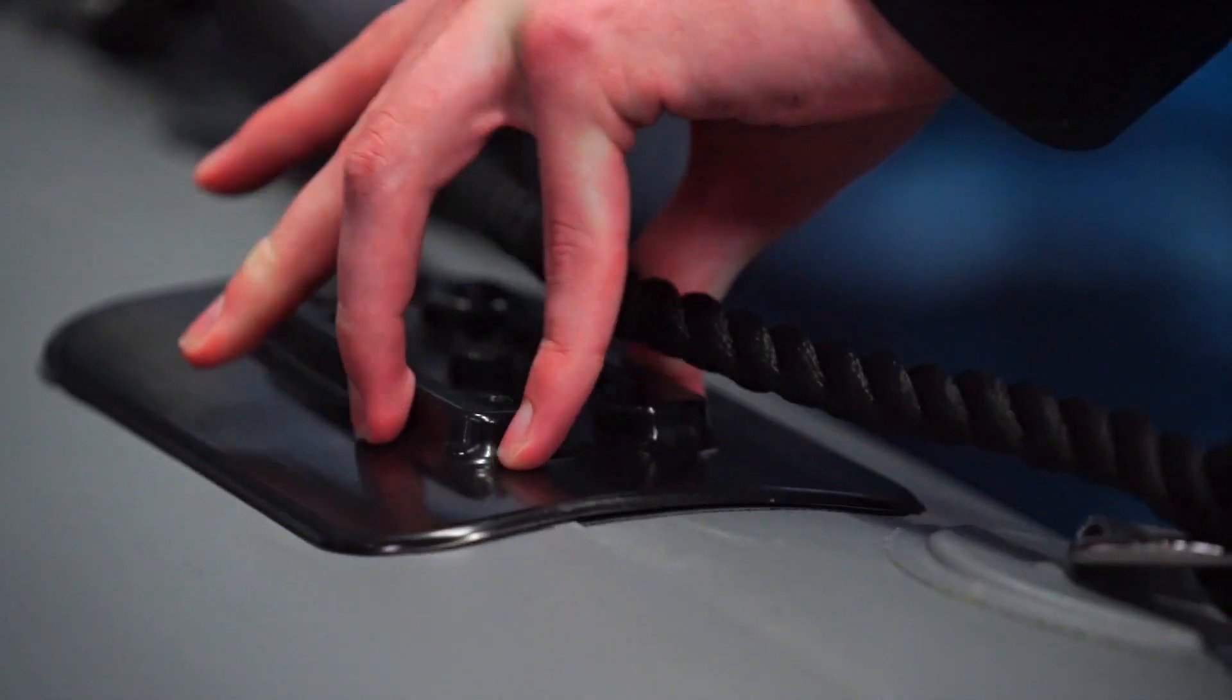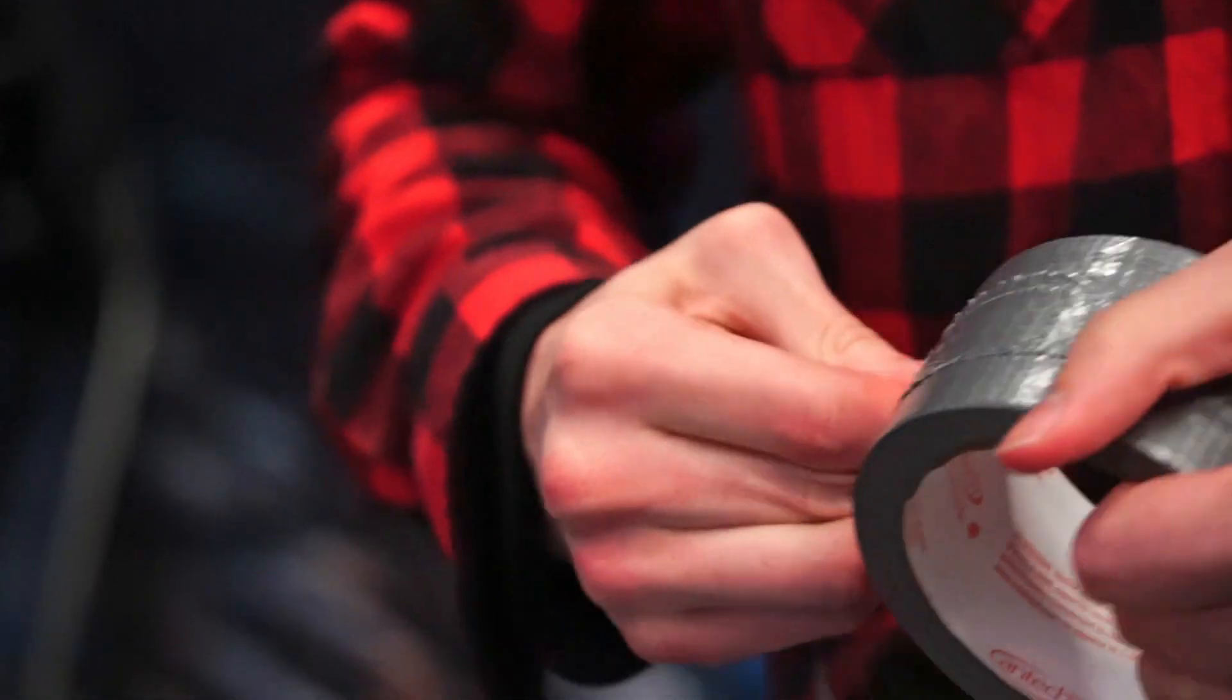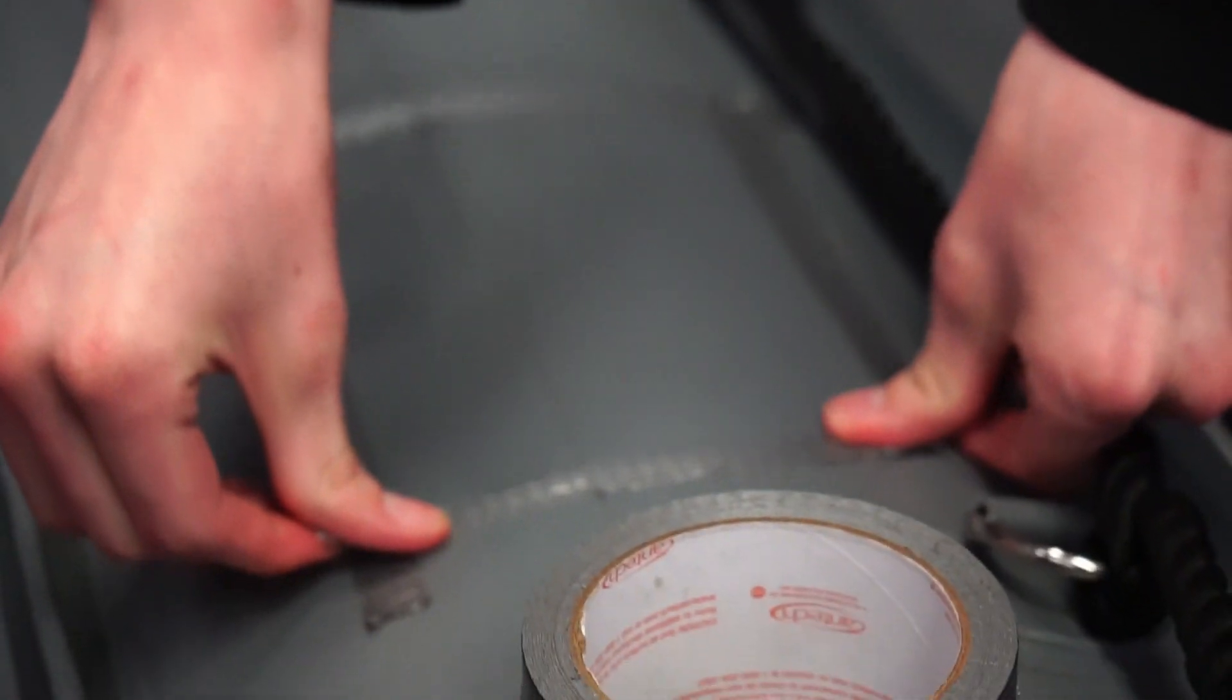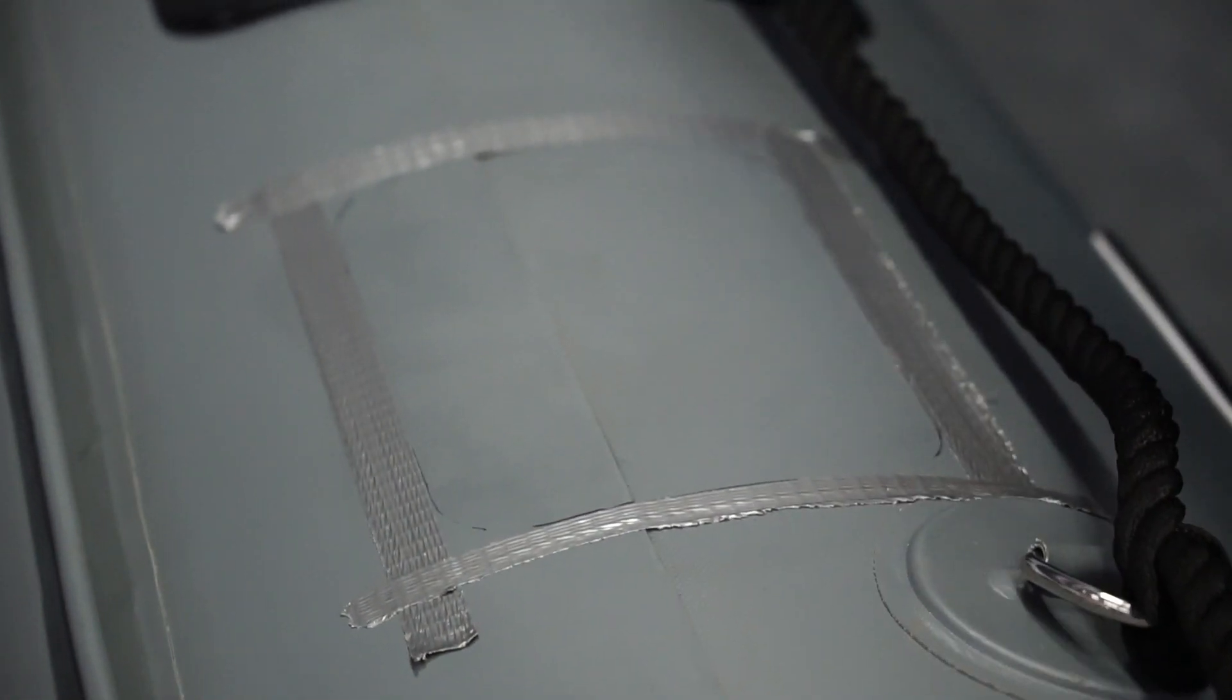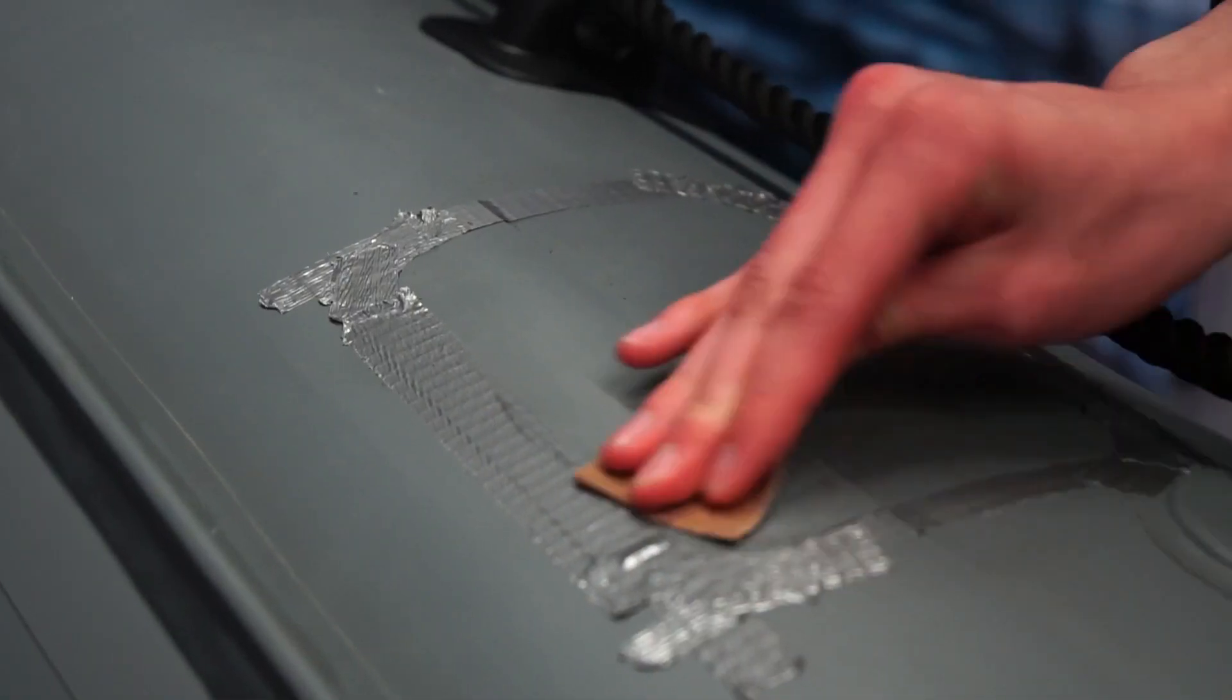Step one is to choose and trace the location of your pad or patch. Step two is then to mask off the selected area with duct tape. Step three will be to score both the pad and within the masked off area on the boat.